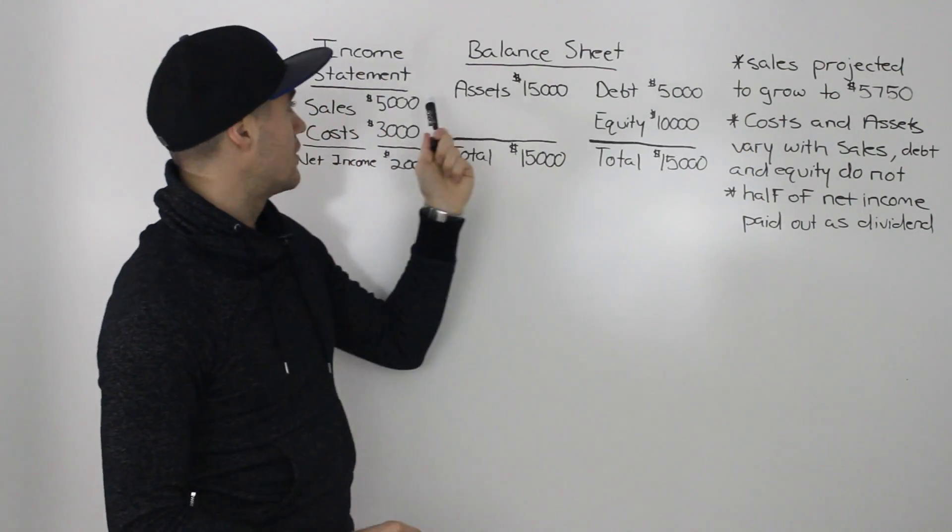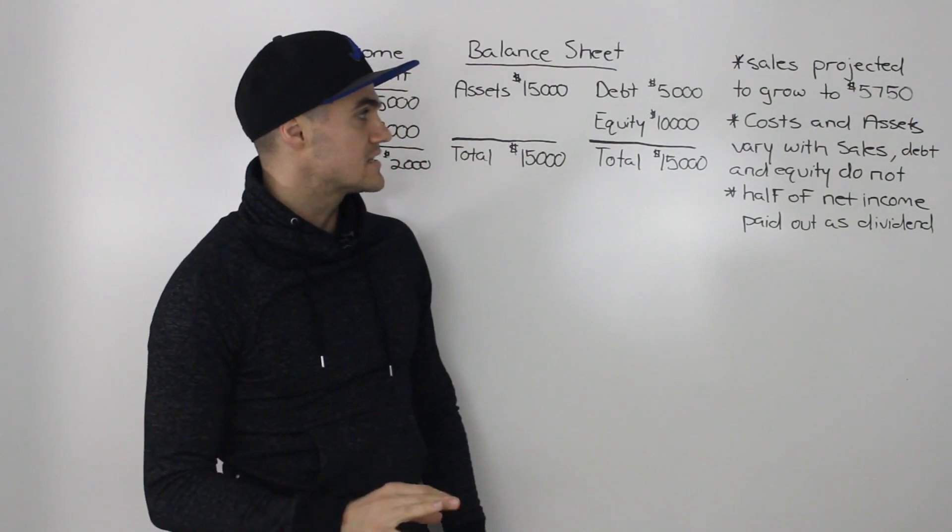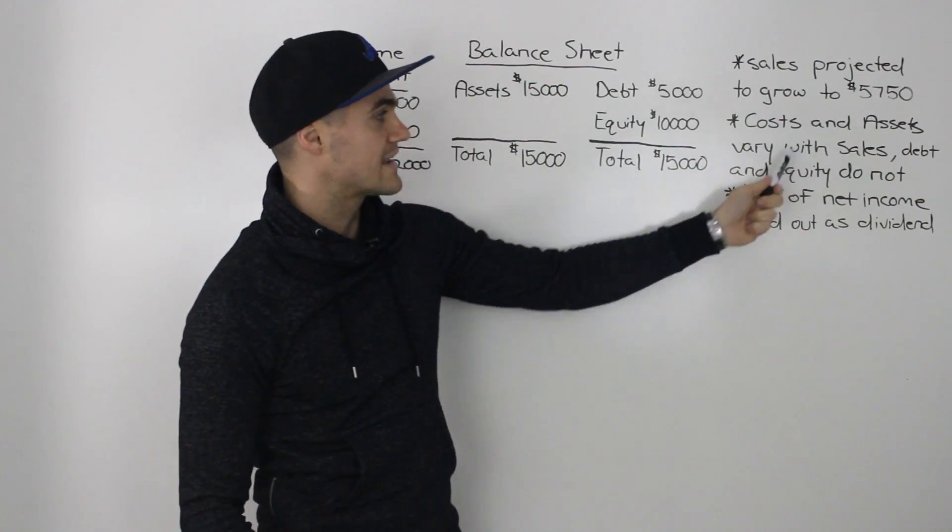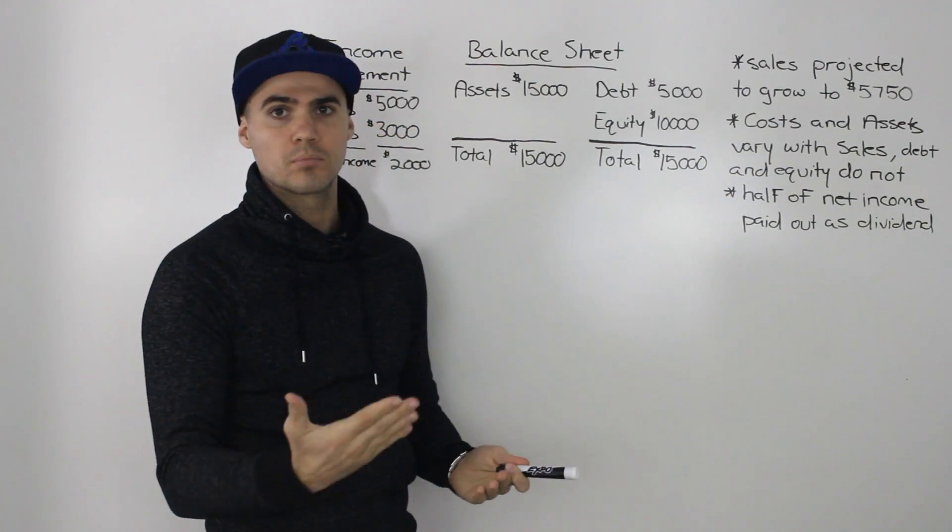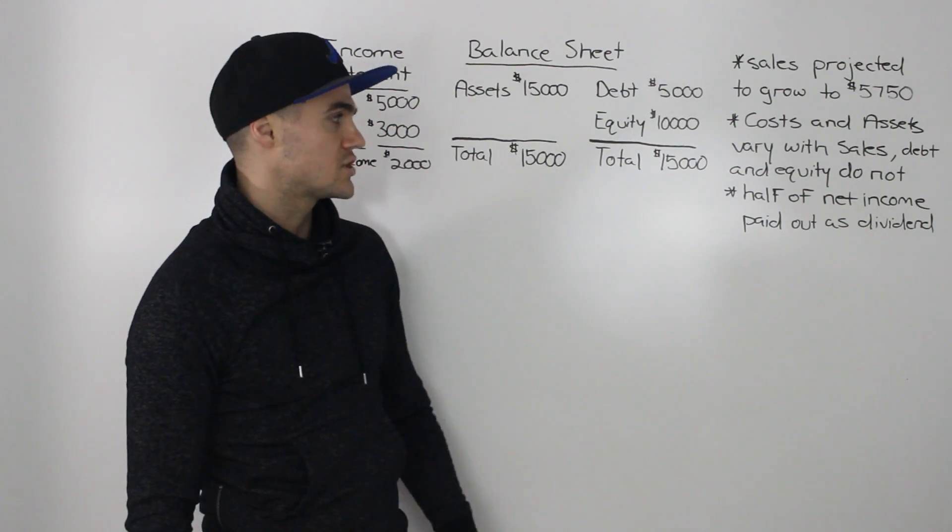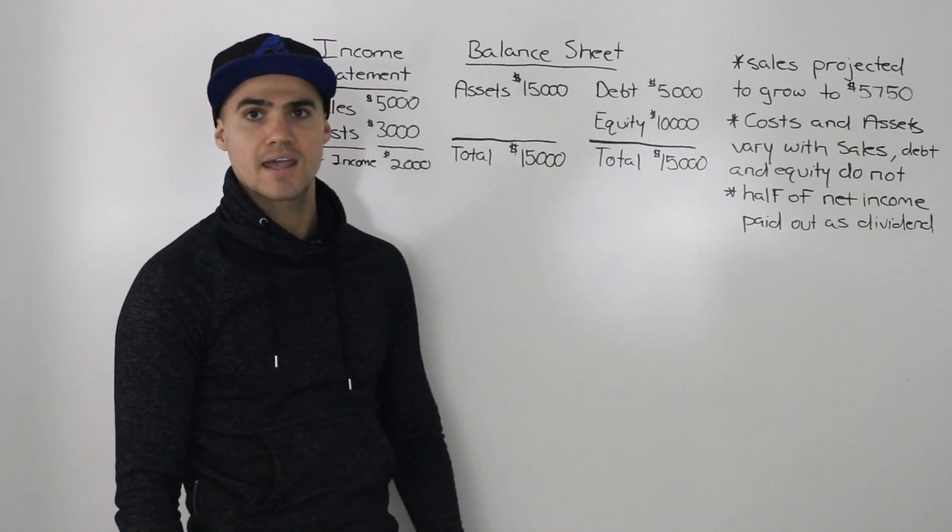The sales of $5,000 are projected to grow to $5,750. And in this case, instead of everything varying with sales, only the costs and assets vary with sales or are proportionate to sales. Debt and equity on the balance sheet are not. Also, half of net income is paid out as a dividend.